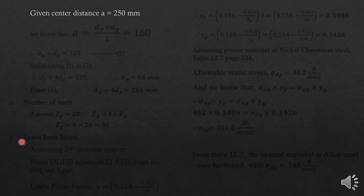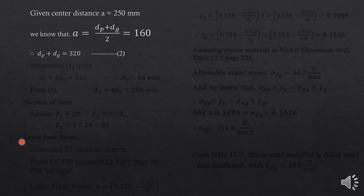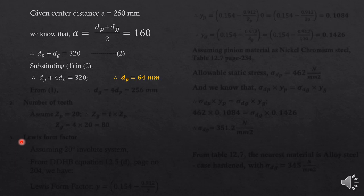From the theory of gears, center distance is the average of the pitch circle diameters, equal to 160 mm as stated in the problem. Therefore the second equation is dP + dG = 320. Substituting dG = 4 × dP into equation 2, we get the pitch circle diameter of the pinion as 64 mm, and the diameter of the gear as 256 mm.